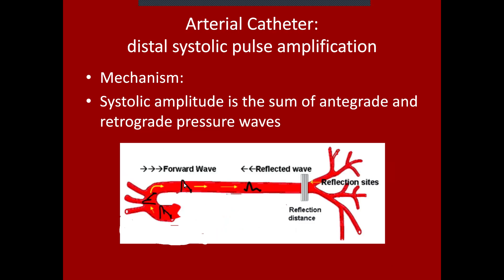Here's a cartoon describing this phenomenon. You can see the aorta wrapping around to the descending aorta, going down the arterial system, and reflecting off the high-resistance point at the arterioles. The reflected wave has a different amplitude depending on how close it is to where it originates.